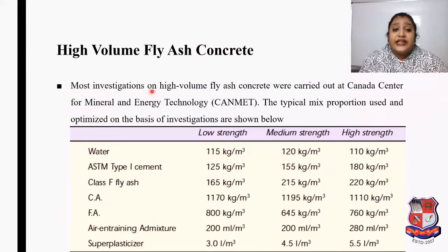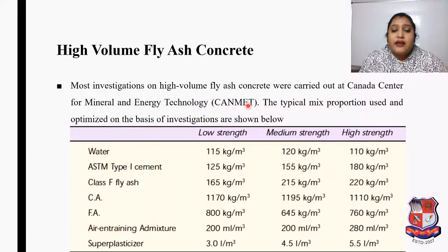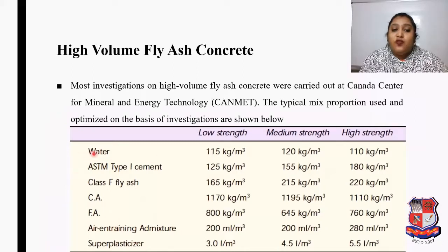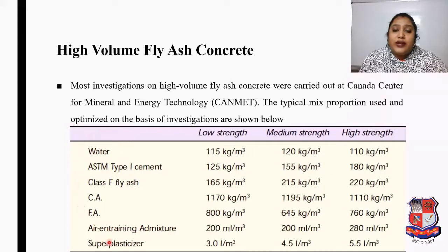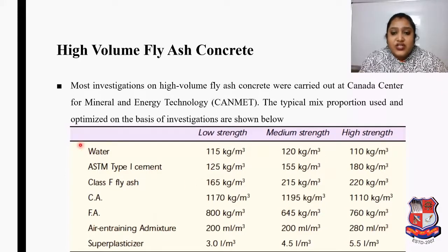Most investigations on high volume fly ash concrete were carried out at the Canada Centre for Mineral and Energy Technology, known as CANMET. The typical mix proportions used and optimized on the basis of investigations are shown in a table, covering water quantity, ASTM Type 1 cement quantity, Class F fly ash quantity, coarse aggregate, fine aggregate, air-entraining admixture, and super plasticizer — all given as per the strength level.